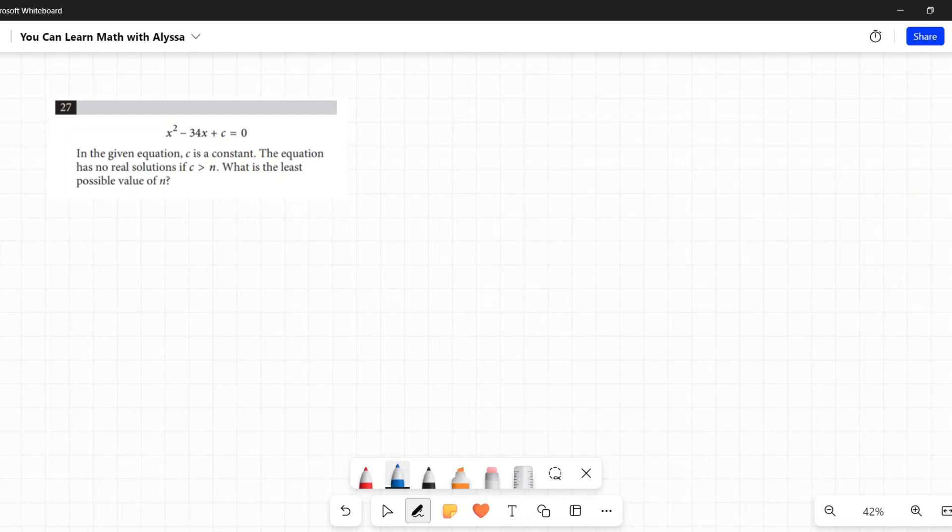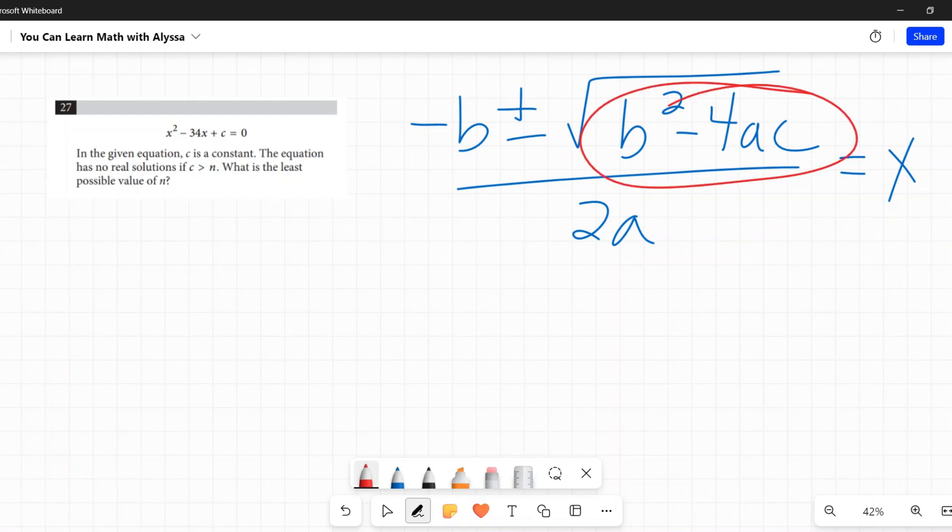Sometimes we see the discriminant by itself, but it is a part of the quadratic formula - it's the reason this works. The quadratic formula says if I have a quadratic, I can solve it by using -b ± √(b² - 4ac) all over 2a, and then I can solve for x. This part right here under the square root...